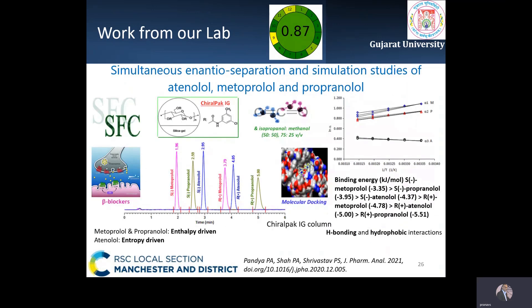In a further study, three beta blockers — atenolol, metoprolol, and propranolol — enantiomers were well separated on a Chiral Pack IG column. Metoprolol and propranolol enantiomers were enthalpy-driven while atenolol enantiomers were entropy-driven, as evident from the separation factor versus temperature plot. Binding energies were in correlation with elution order, and the greenness score was 0.87.